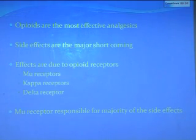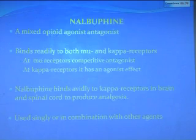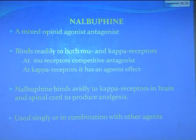Opioids are the most effective analgesics, but their major shortcomings are their side effects, which include pruritus — the most common — nausea, vomiting, respiratory depression, and many more. These effects are due to opioid receptors: the mu, kappa, and delta receptors, but the majority of side effects are due to mu receptors. That is the reason we are using nalbuphine, which is a mixed opioid agonist-antagonist. It binds readily to both mu and kappa receptors; at mu receptors it competitively acts as an antagonist, resulting in decreased side effects, while at kappa receptors it has an agonist effect, which is responsible for its analgesia.